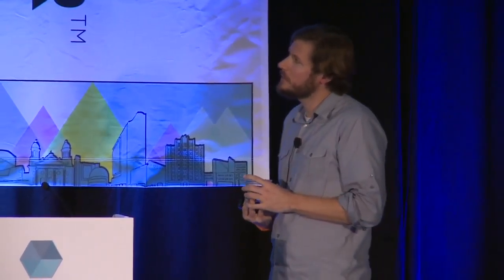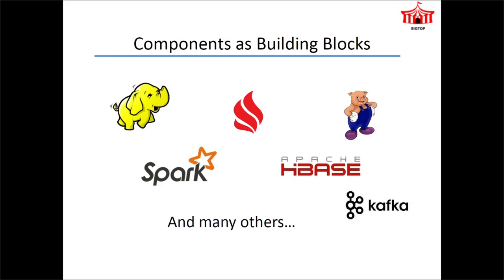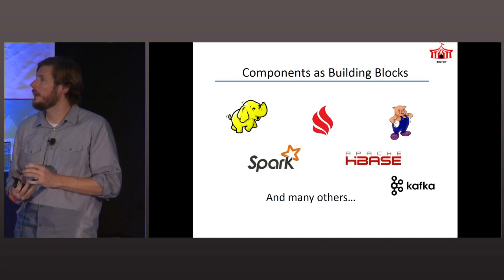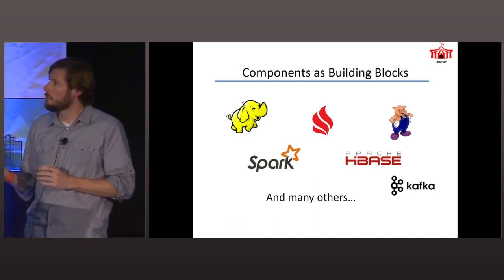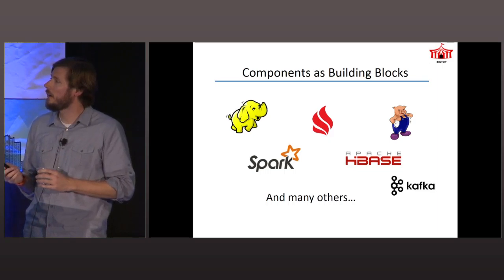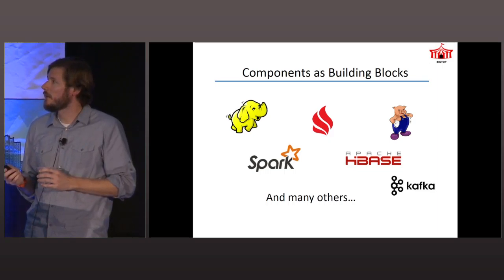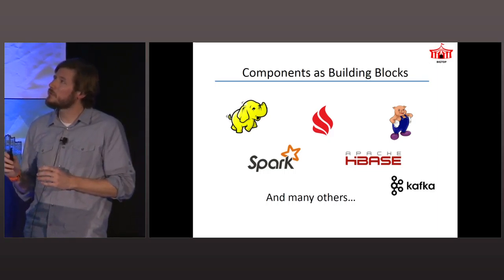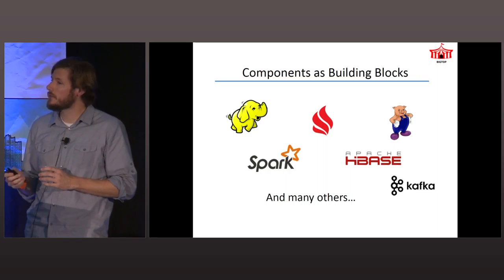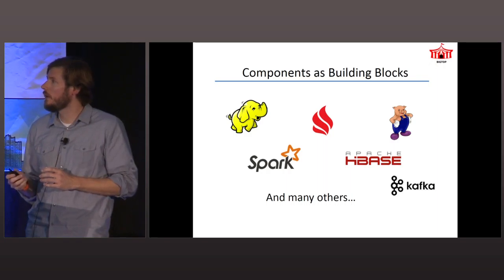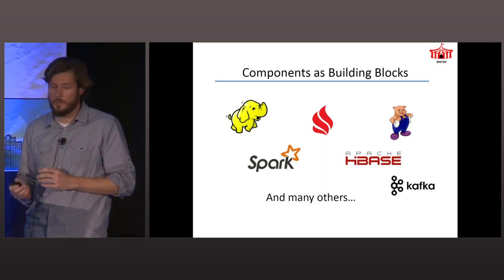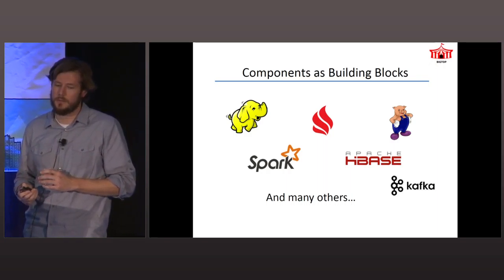In Big Top, everything is treated as a component. So every project is dubbed a component. I've mentioned a couple already — these are some of the more popular ones. There are about 26 in total, and we have a couple more coming on in time for ApacheCon in a few months.